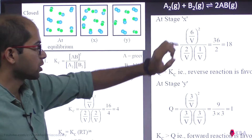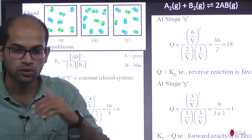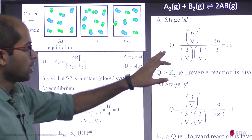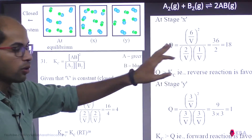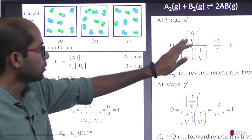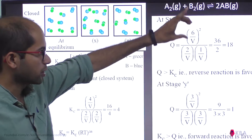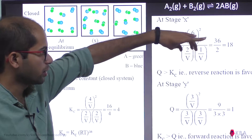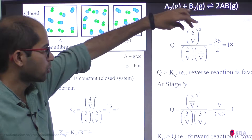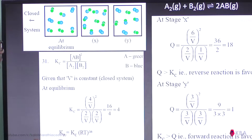For stage X, we determine whether the reaction goes forward or reverse. That's why Q is the reaction quotient. Q equals [AB]² divided by [A2] × [B2]. The formula uses number of molecules.